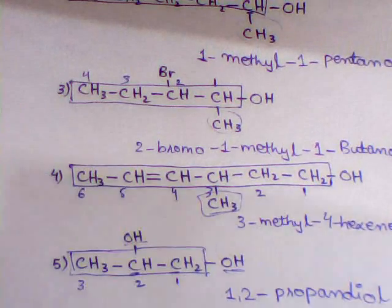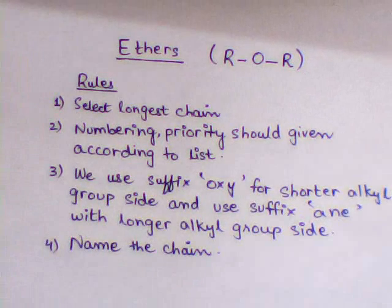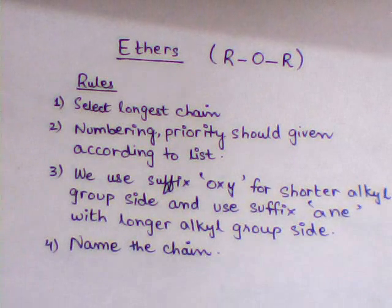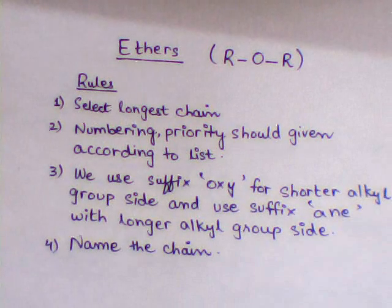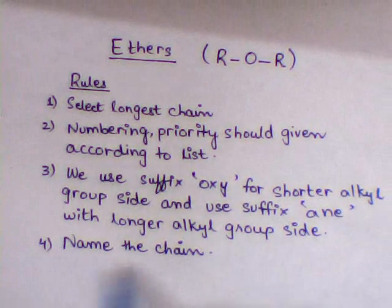Now let's move to the naming of ethers. Ethers are organic compounds that contain hydrocarbon groups attached to an oxygen atom. The rules for IUPAC naming of ethers are slightly different. Rule 1 is select the longest chain. Rule 2 is numbering, following the priority list shown before. Rule 3 is: use the suffix 'oxy' for the shorter carbon atom side, and suffix 'ane' for the longer carbon atom side. Rule 4 is name the chain.